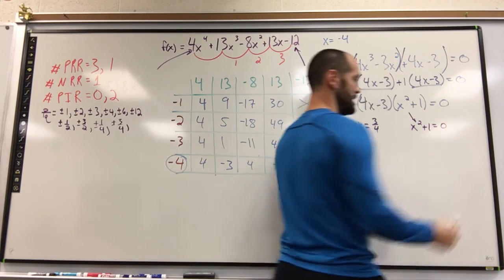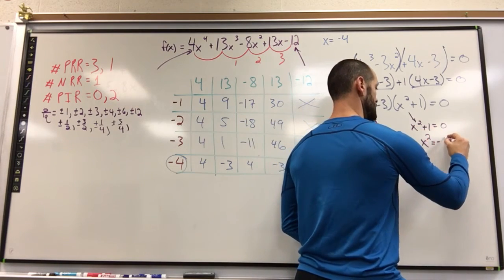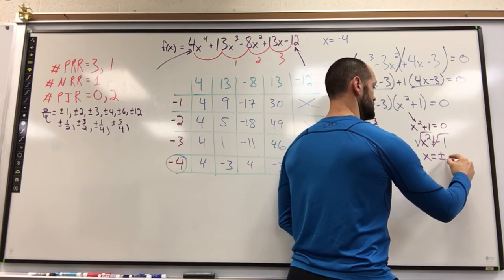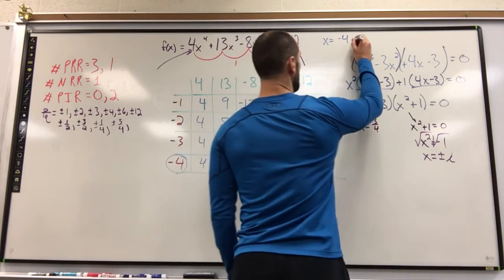This set equal to zero. Now I think some of us can do it in our head, but some of you still need to see it. Subtract the one. Square root. Plus or minus i. So all my roots together then, negative 4, 3 fourths, and plus or minus i.